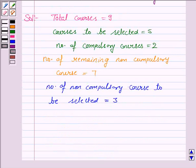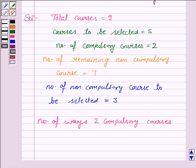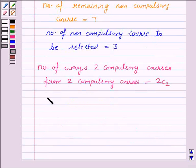Now, we have to select 5 courses, out of which 2 are compulsory and 3 are non-compulsory. So the number of ways to select 2 compulsory courses from 2 compulsory courses is equal to 2C2.